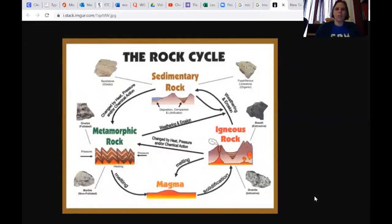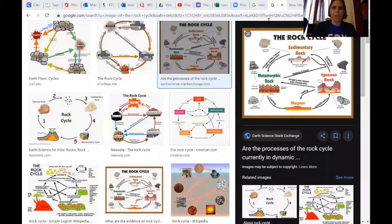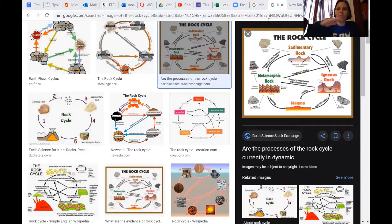The rock cycle starts with sediment, or broken down pieces of rock. As those are laid down in flat layers, they get compressed and squished together and become rock. And so the first type of rock we're going to talk about is sedimentary rock.